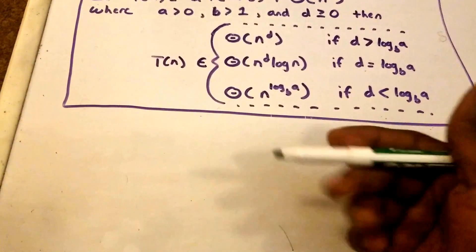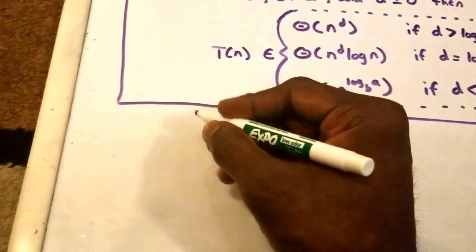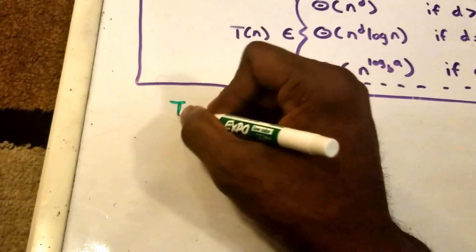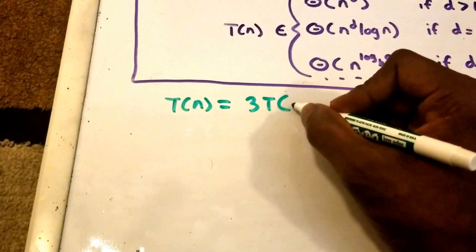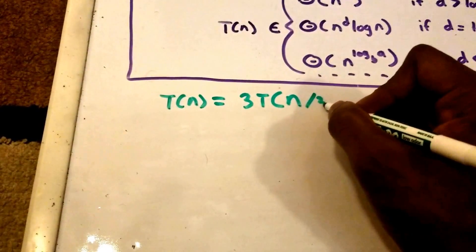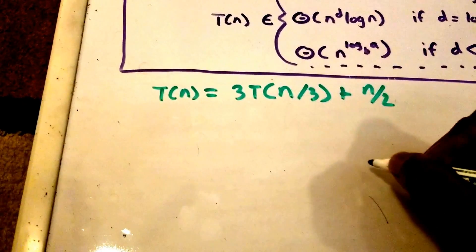Alright, so let's first try to rewrite our function into this form here for our master theorem. So our original function was T(n) is equal to 3 times T(n/3) plus n/2.